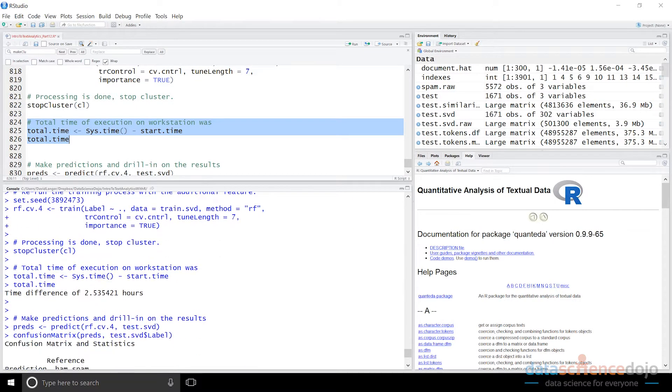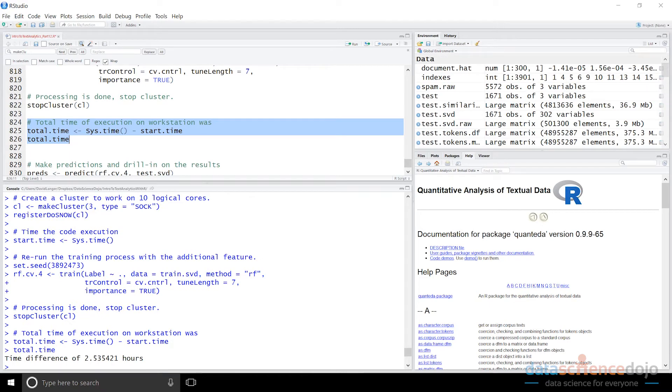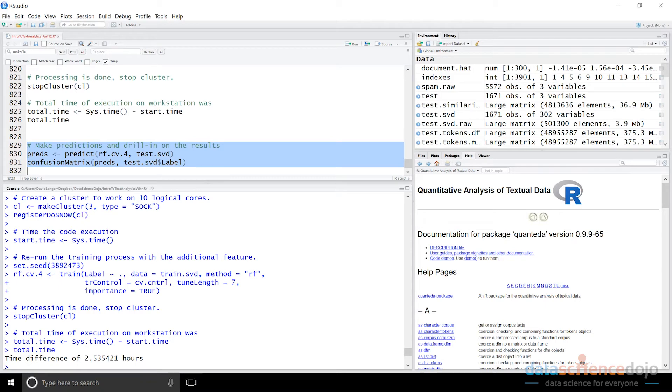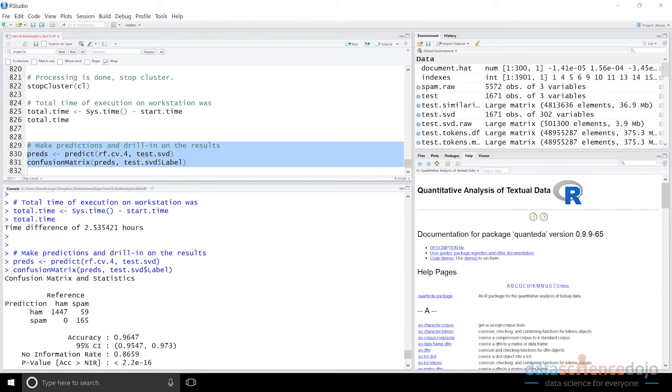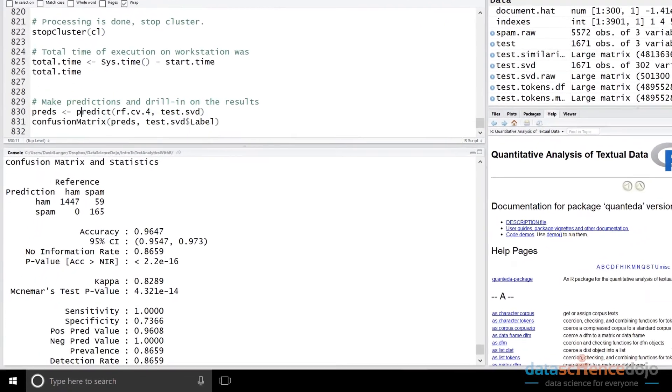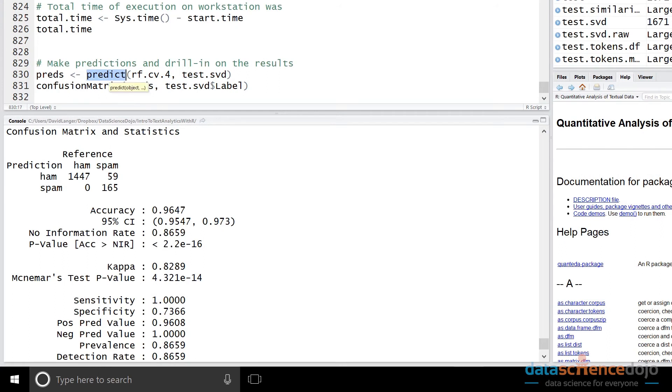And then we stop the cluster when we're done and we take another timestamp so that we can actually say how long did this execute. And if I scroll down here, you can see the results. So on my laptop using three cores, this took 2.5 hours to run. Obviously if you have more cores, it's going to run faster, but it took two and a half hours. So I basically fired this off and then went off and hung out with my wife.